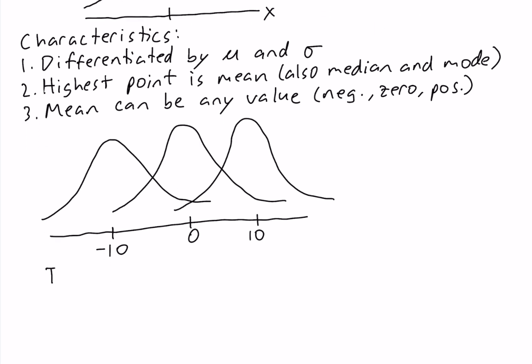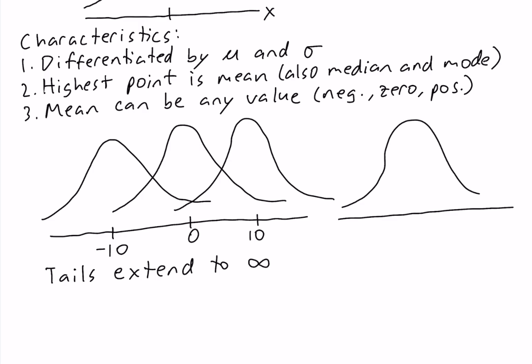The tails of the normal distribution extend to infinity. We have a left tail and a right tail. They get closer and closer to zero, but they never touch zero, and they keep extending until negative infinity and positive infinity.